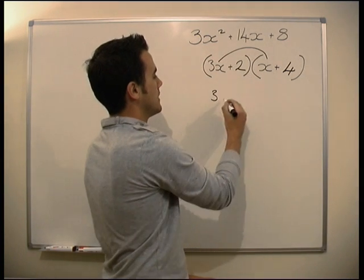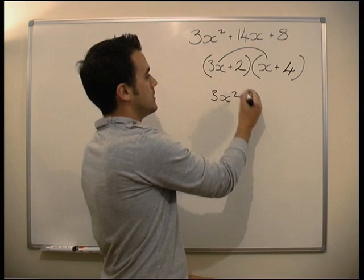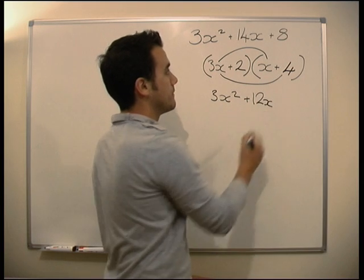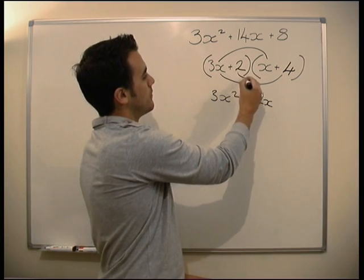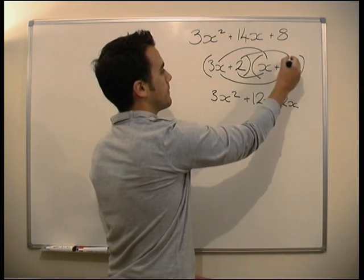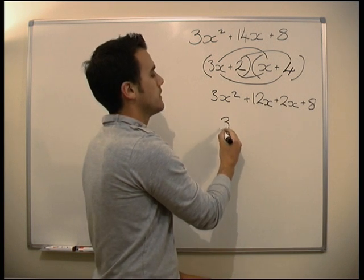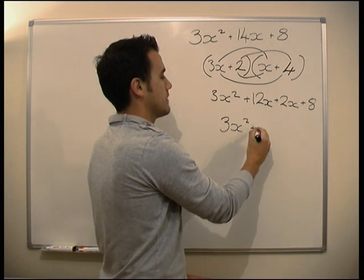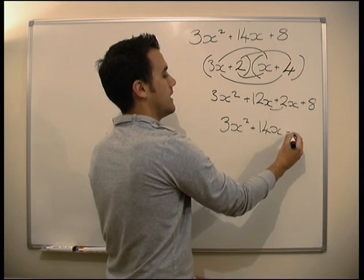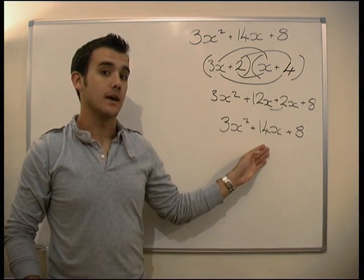Let's check it. 3x squared plus 12x plus 2x plus 8. That gives us - there's our 3x squared, there's our 14x, and there is our 8. So there we go. That's as complicated as it's going to get with these questions.